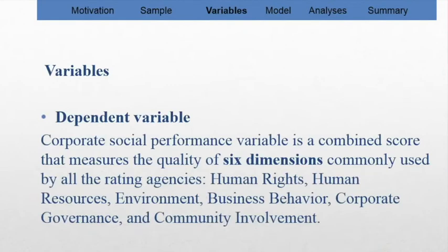Our variables. First, the dependent variable is the corporate social performance, which is a combined score that measures the quality of six dimensions like human rights, human resources, environment, business behavior, corporate governance, and community involvement.